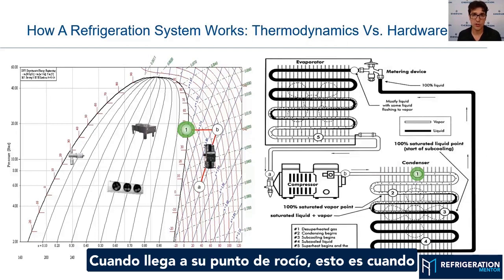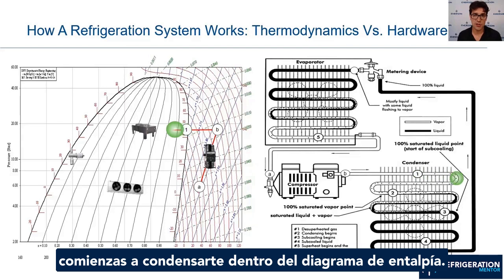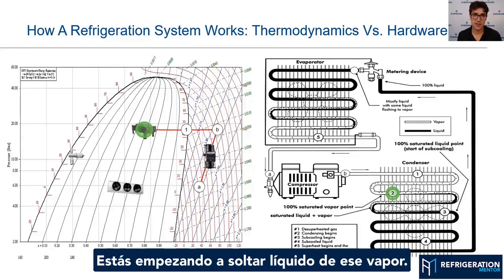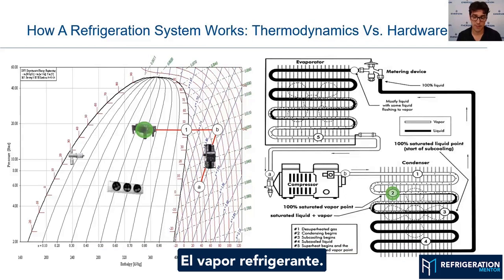When you hit your dew point, this is when you start to condense inside the enthalpy diagram. As you can see, at point 2, that's where the condensing starts. You're starting to drop liquid out of that vapor — the refrigerant vapor.